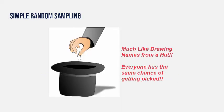Think of it like drawing names from a hat — everyone has the same exact chance of getting picked. That's how we consider simple random sampling. If you wanted to sample people from a large population, everyone has the same likely chance of being selected. But simple random sampling is often not easy to achieve, so there have to be some other methods to collect data.